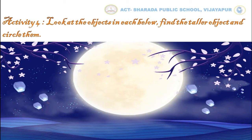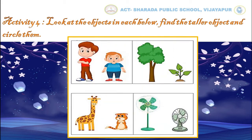Now let us move on to activity number 4. That is, look at the objects in each box below, find the taller object and circle them. Kids, here we can see some pictures. In these pictures, you have to identify the taller objects.